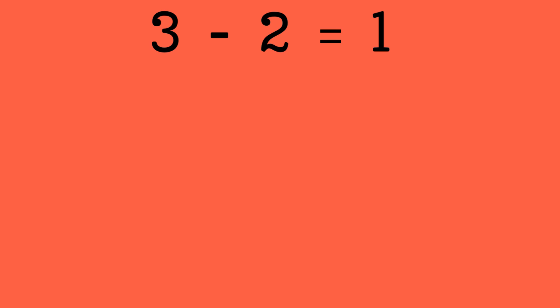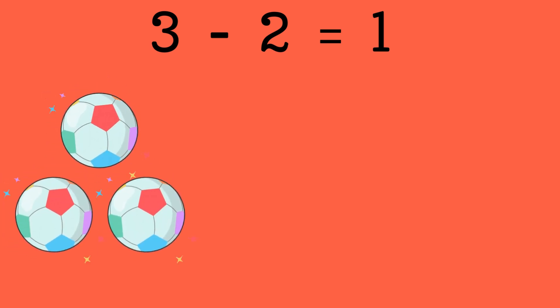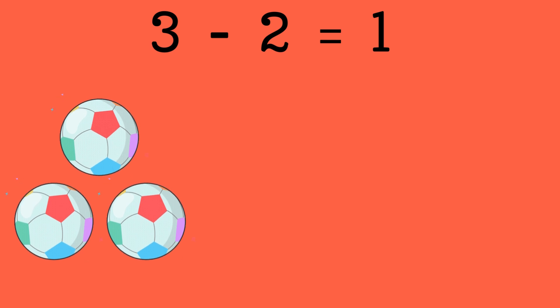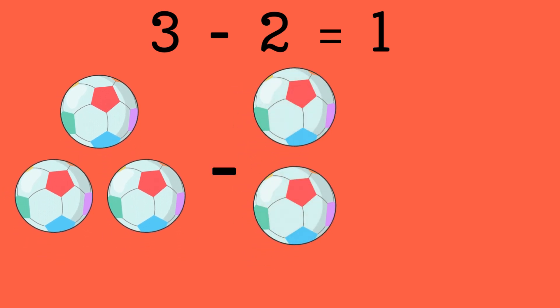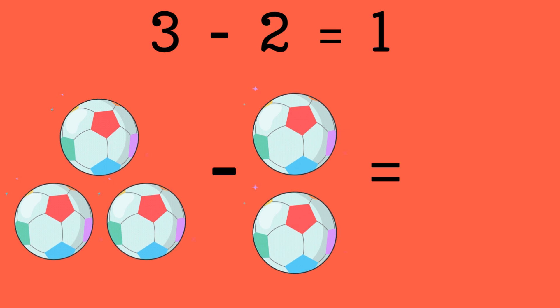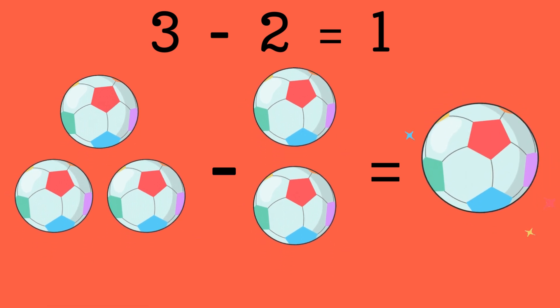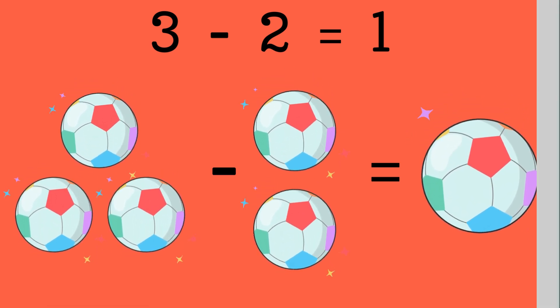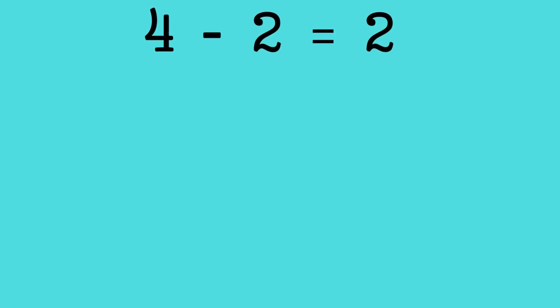Now we will learn subtraction by number 2. 3 minus 2 equals 1. Let's say you have 3 balls and you gave 2 balls to your friend. How many balls left? Correct, 1 ball.